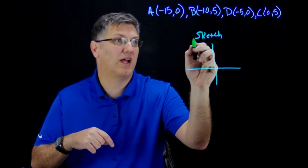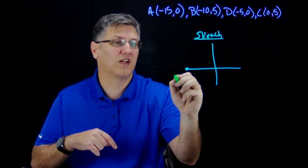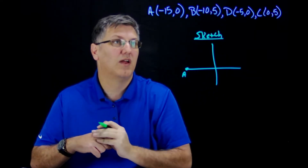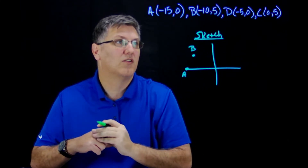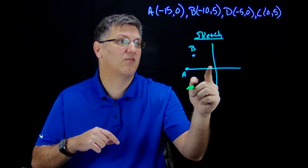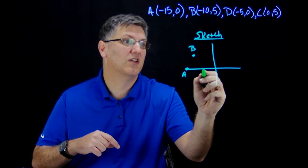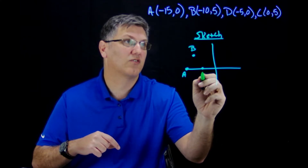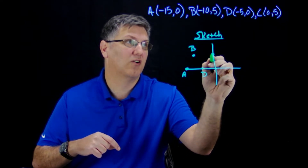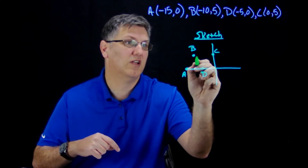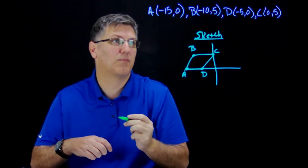Draw yourself an xy-axis and put everything in the general area. So we have negative 15, 0 — let's call that A. Then we have negative 10, 5 — let's call this B. Then we have negative 5, 0 — let's call this D. And then up here we have 0, 5 — let's call this C. So this definitely looks like it would be a parallelogram, but we're not completely sure.